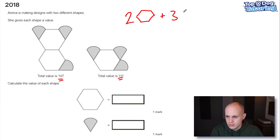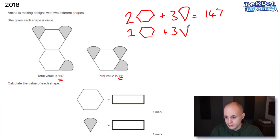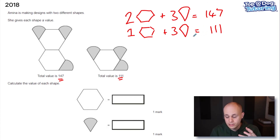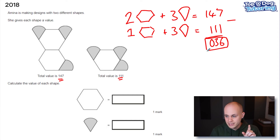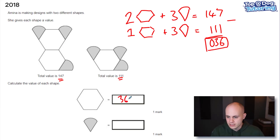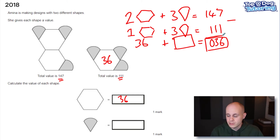Two hexagons plus three cones equals 147, and one hexagon plus three cones equals 111. Children are supposed to recognise that the only difference between these two equations is one hexagon. So if I subtract them, I get 36 — that number must be the value of that one hexagon that's different between them. Therefore we know straight away that each hexagon is worth 36.